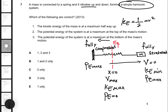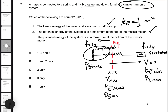Looking at the choices: number one says the kinetic energy of the mass is maximum halfway up — correct, because halfway refers to the equilibrium point. The potential energy is maximum at the top of the mass's motion — correct. The potential energy is maximum again at the bottom, which is the fully compressed point — also correct. So all of them are correct, which means choice A is the correct answer for question seven.